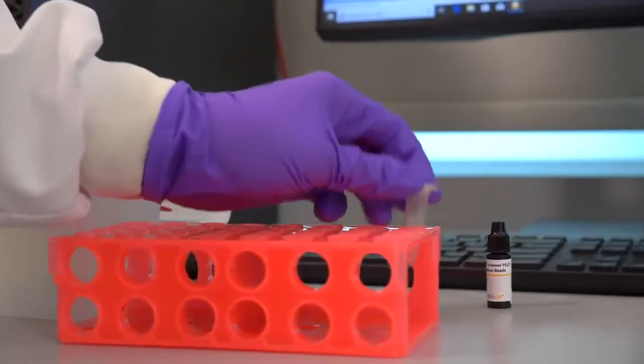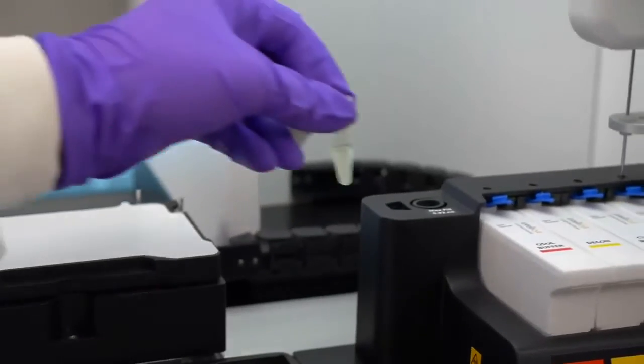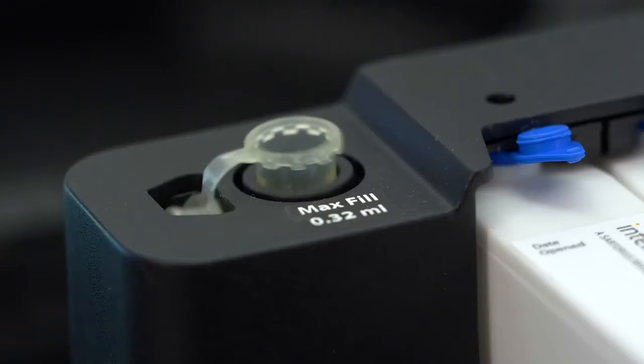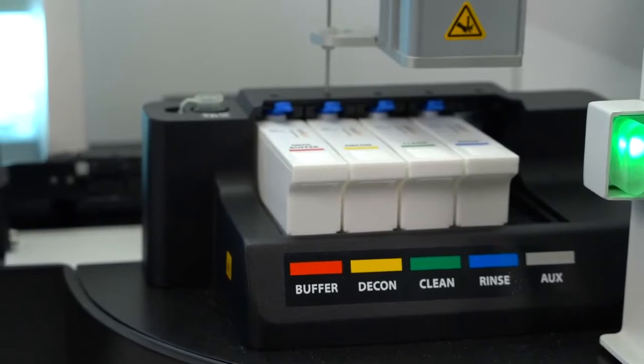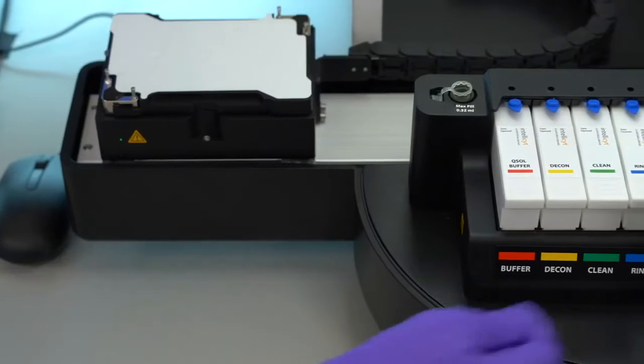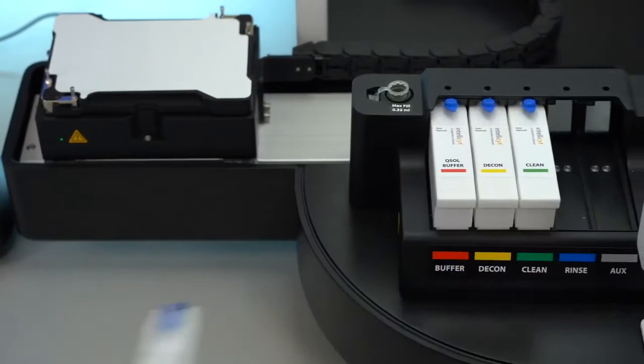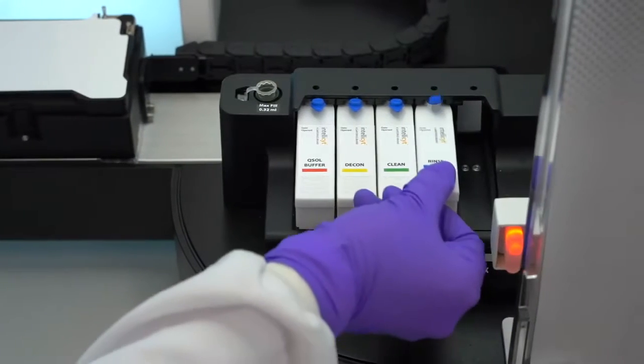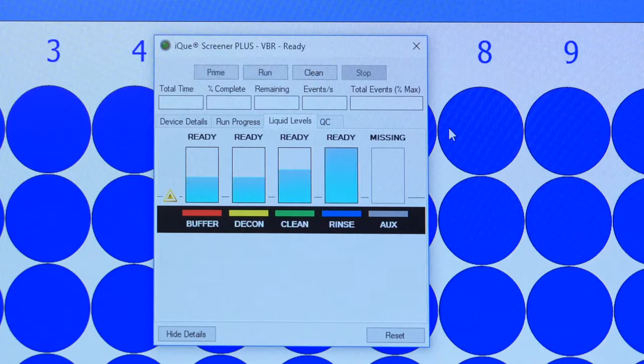The IQ3 has been designed with ease of use in mind, including automated QC with onboard vortexing to ensure proper resuspension just prior to sampling. Built-in rinse station, liquid level detection, and user-definable rinsing and shaking protocols ensure reliable sample processing for complete peace of mind.